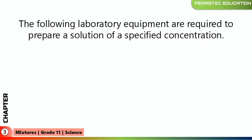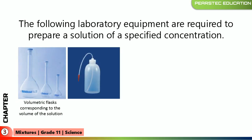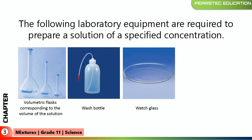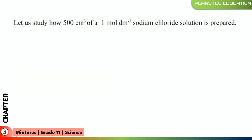The following laboratory equipment is required to prepare a solution of a specified concentration: a volumetric flask corresponding to the volume of the solution, a wash bottle, a watch glass, and a funnel. These are the equipment we use for making standard solutions in the laboratory.